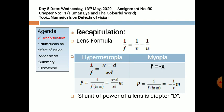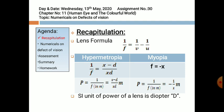The power of lens in hypermetropia is given by 1/f, where f is the reciprocal of the focal length. In myopia, the power of lens is similarly given by 1/f. Now let's start our numericals.